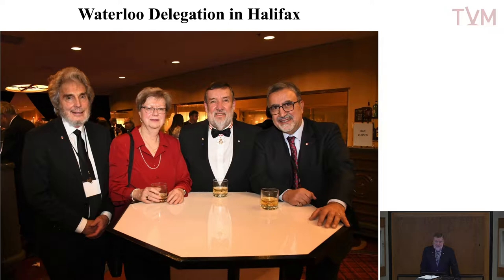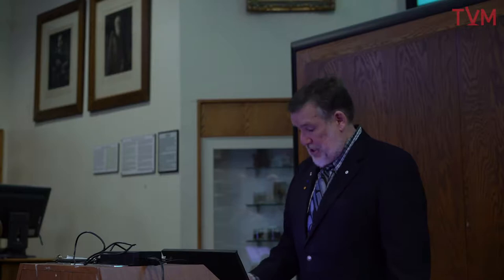So here are the objectives: I want to illustrate the Graph Model for Conflict Resolution. We developed a lot of different methodologies, and I'm going to show you how it works by actually looking at a groundwater contamination dispute that actually took place. You can see this as a yin and yang — on one side you have societal problems, on the other physical systems problems. We try to develop tools in both areas, but there's always that interaction, and how can we capture that with respect to the problem we're looking at?